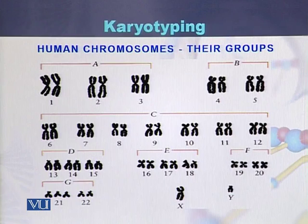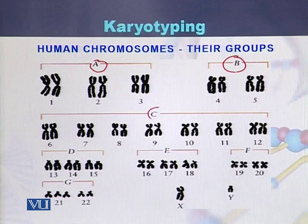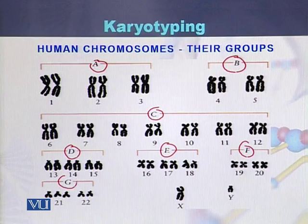The first three chromosomes in humans are considered group A. Chromosomes 4 and 5 are group B. Chromosomes 6 through 12 are group C. Chromosomes 13, 14, and 15 are group D. Chromosomes 16, 17, and 18 are group E. Chromosomes 19 and 20 are group F. Chromosomes 21 and 22 are group G.